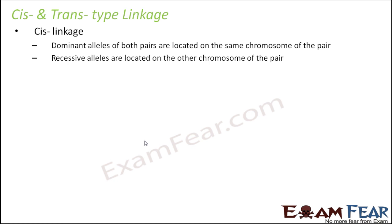Let's first talk about cis linkage. In cis linkage, dominant alleles of both pairs are located on the same chromosome of the pair. Let's understand it in simpler words. Let's say that you have two pairs of linked genes — a first pair and a second pair. The first pair is gene A, for which you have two alleles: capital A and small a.